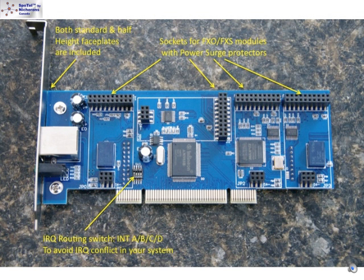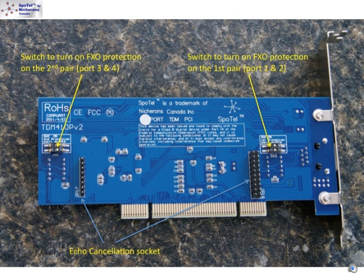The optional hardware echo cancellation module provides 1024 taps — 128 milliseconds of echo cancellation — for superior voice quality on both trunk and station interfaces.